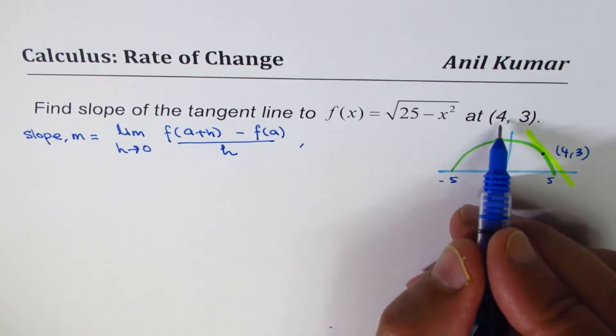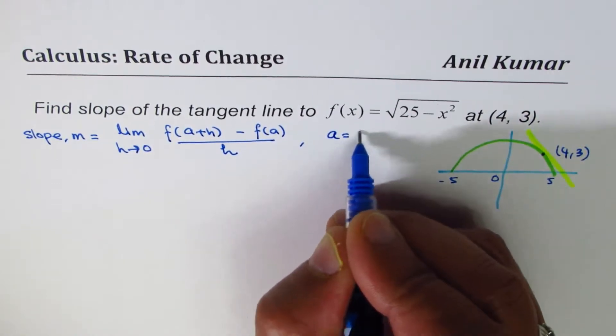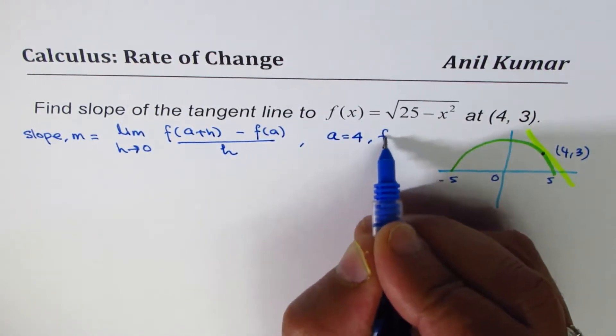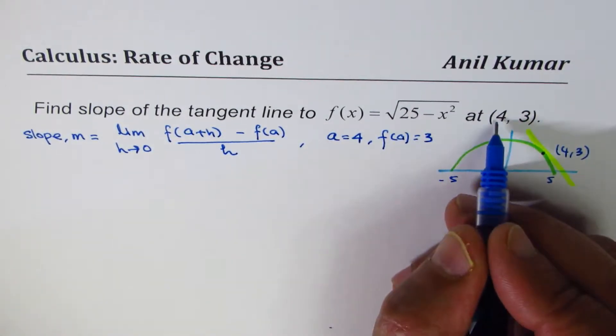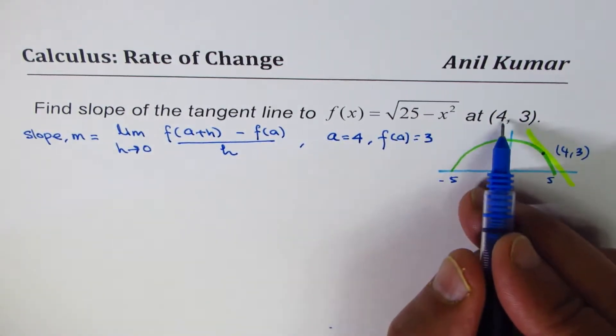Where we are given a is 4. So a equals to 4. And we know f(a) is equal to 3. This value of 3 is f(a), value of the function at x equals to 4.